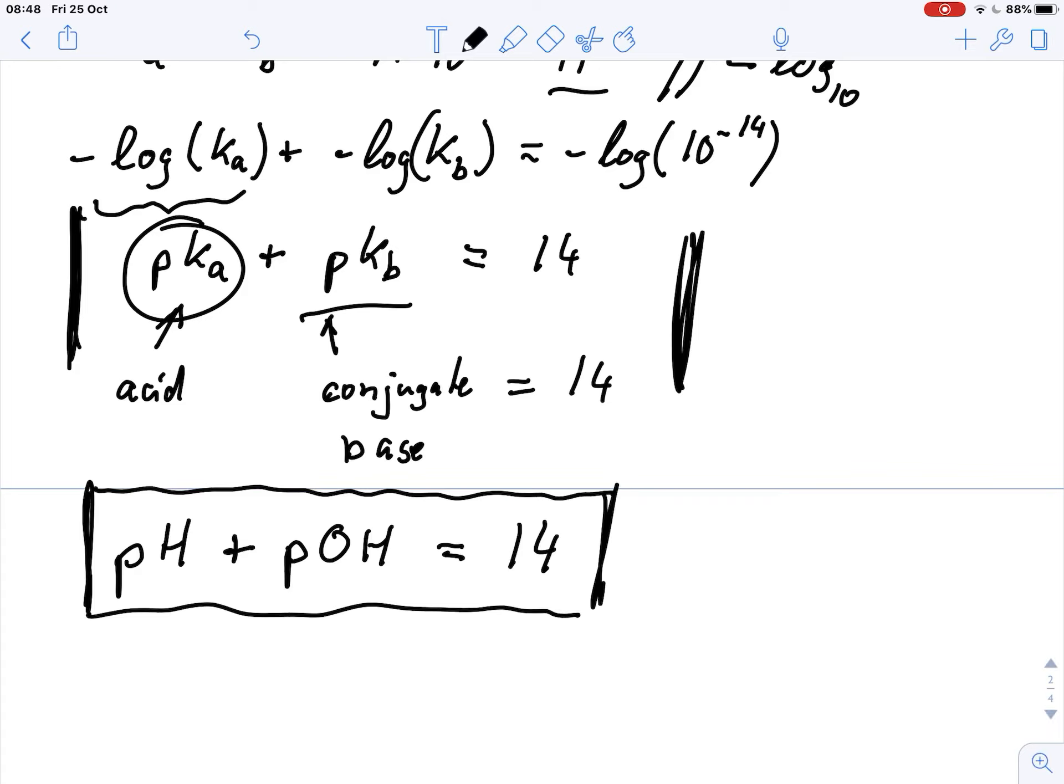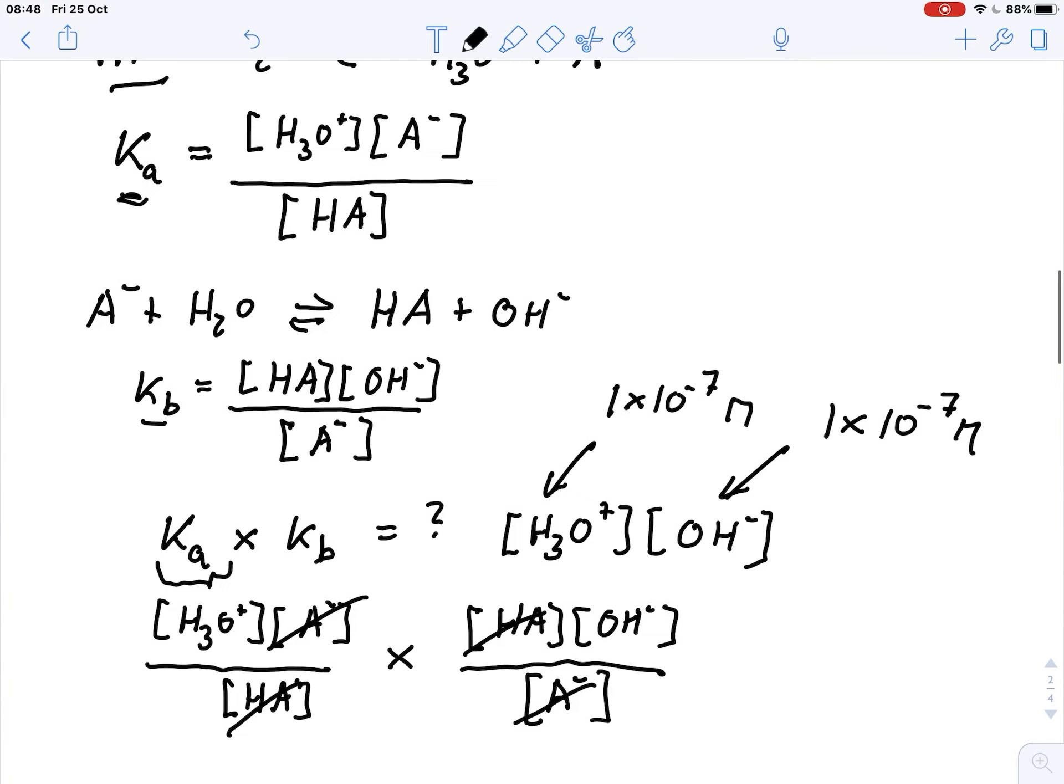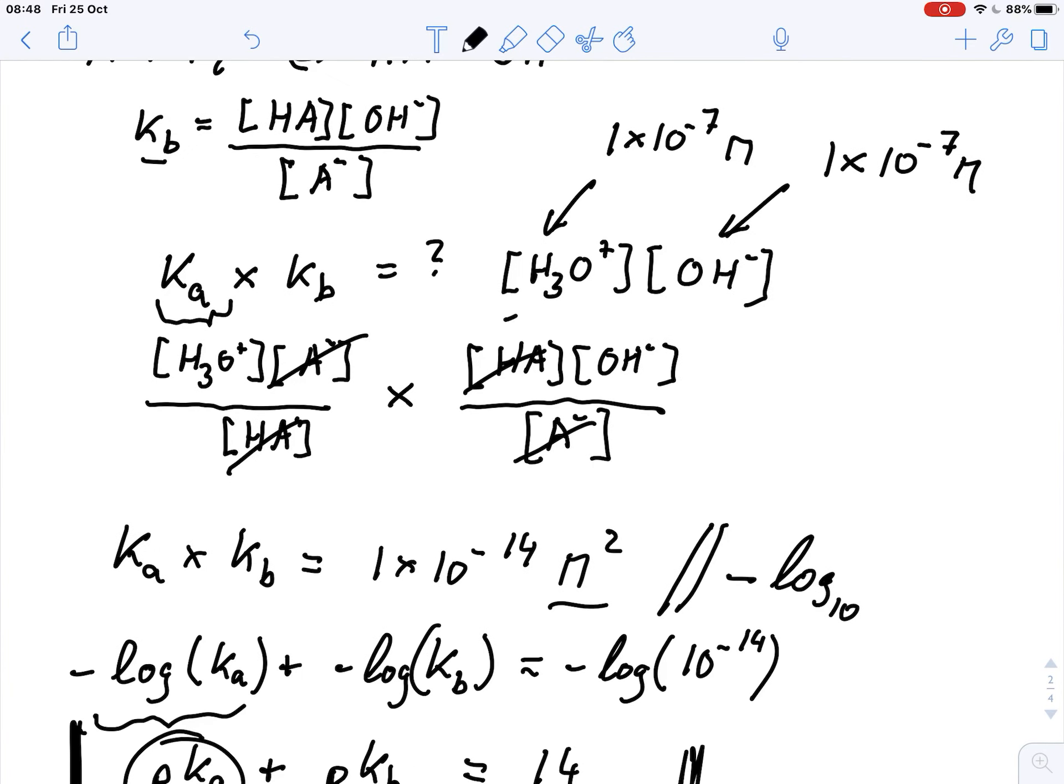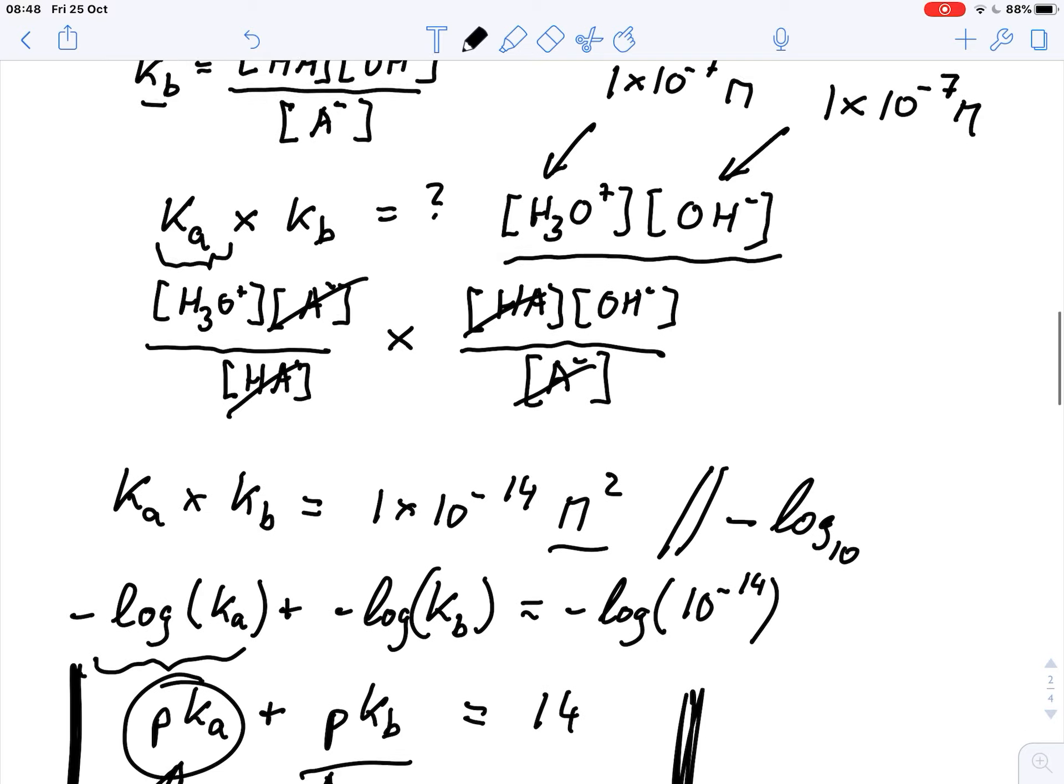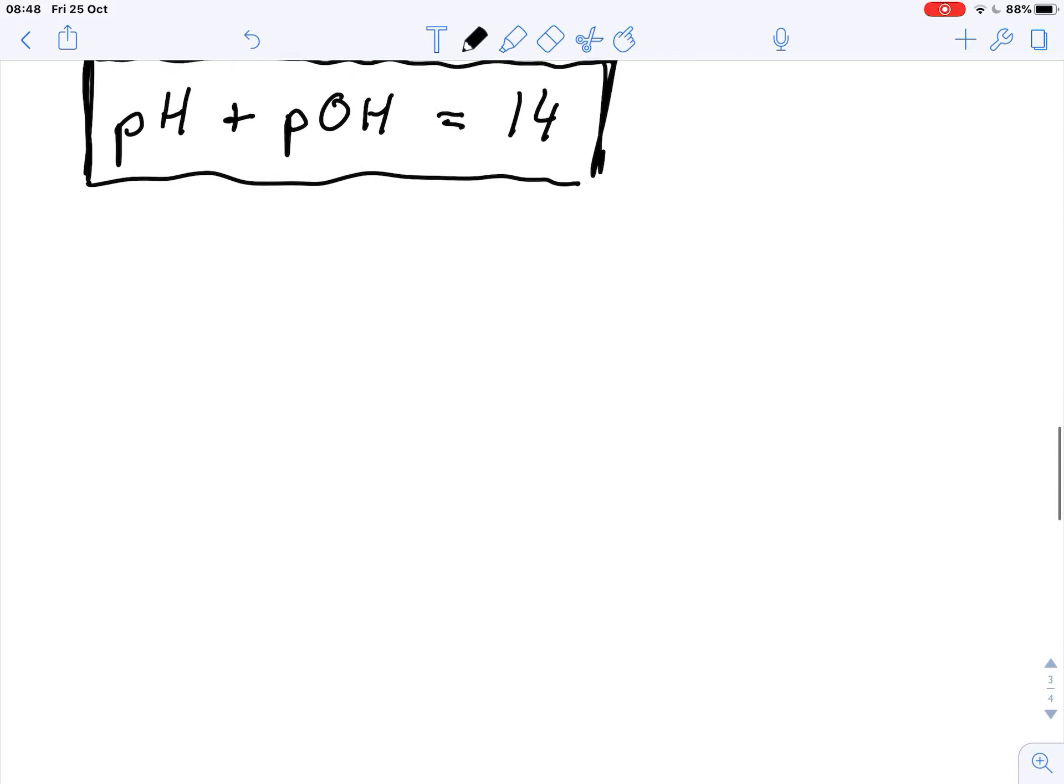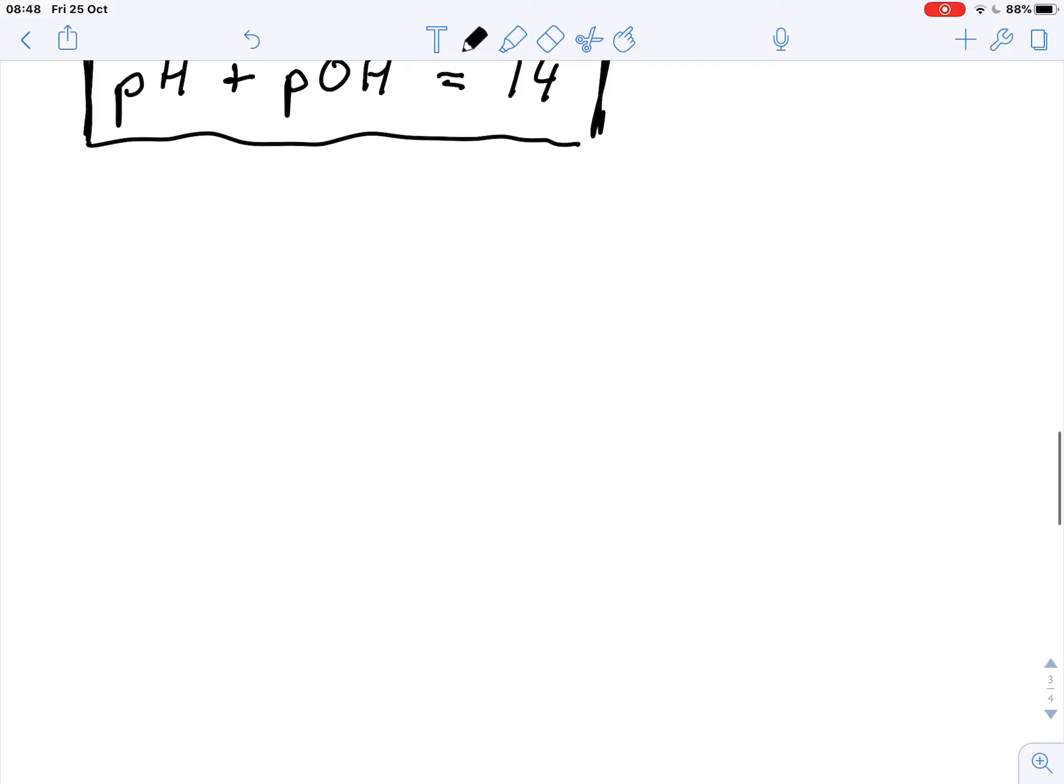Now it's important that this relationship only works if we are dealing with water as a solvent. If we use a different solvent, a different environment, then this relationship obviously would be different, because then our proton concentration and the OH minus concentrations probably would be very different. I hope this makes sense, and thank you very much for watching.